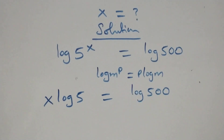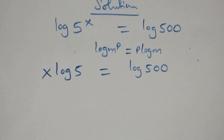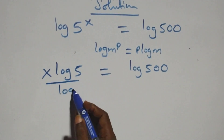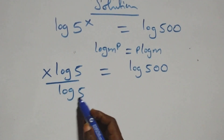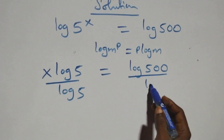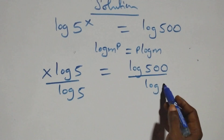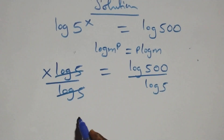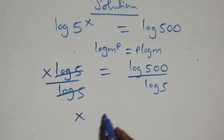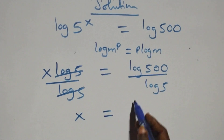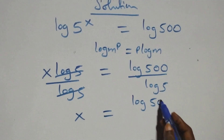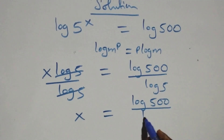The next step: divide both sides by log 5. That is, divide this side by log 5 and also divide this side by log 5. The log 5 terms cancel each other, and we have x equals to log 500 over log 5.